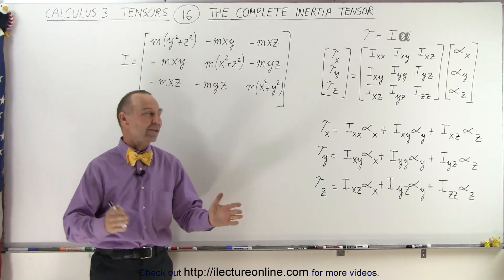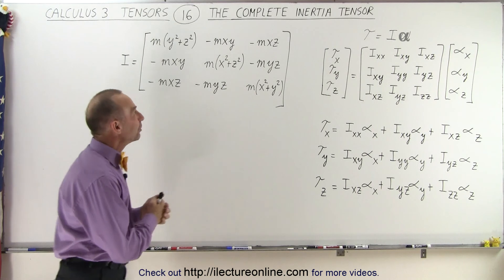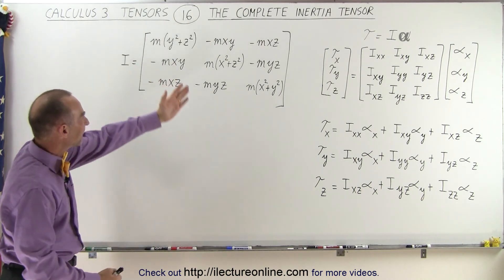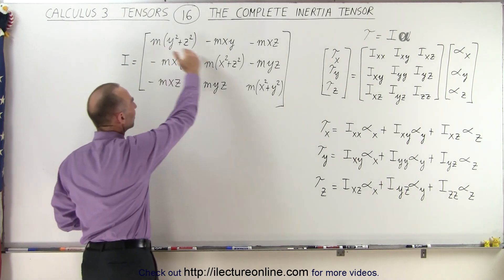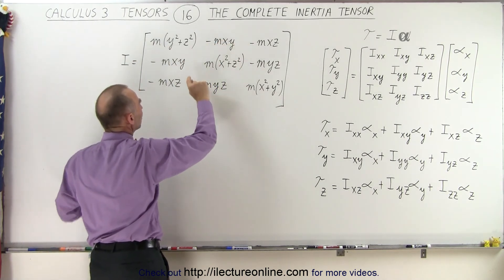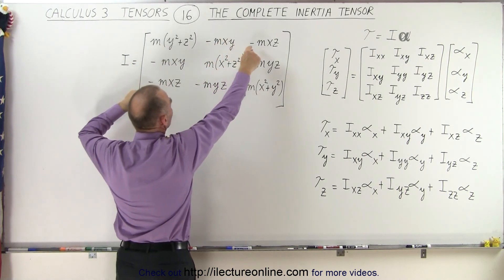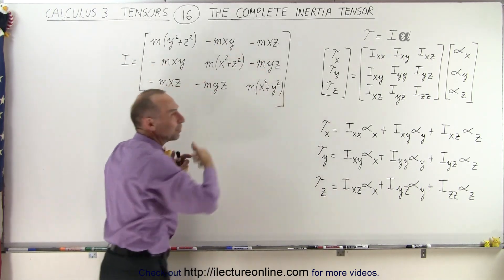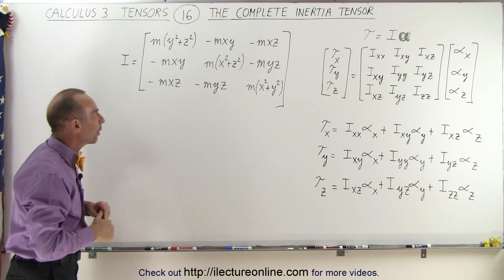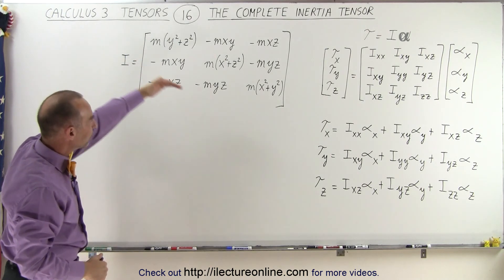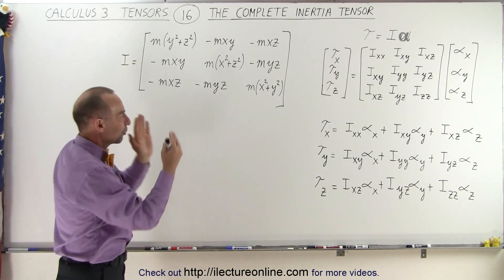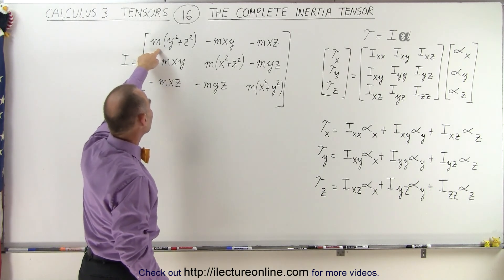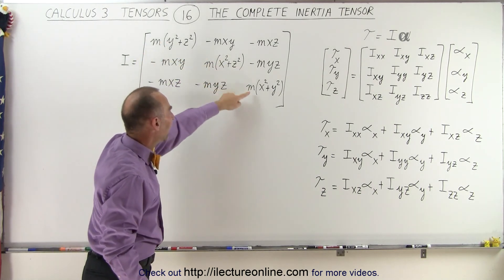Let's take a look at what the entire inertia tensor looks like. Here it is. We have nine elements: the diagonal elements and the off-diagonal elements. Notice that these are the same, these are the same, and these are the same — so there's cross-diagonal element symmetry we need to be aware of. The diagonal elements come from the first portion of the angular momentum equation: Ixx, Iyy, and Izz.